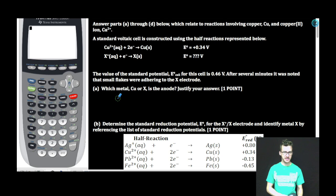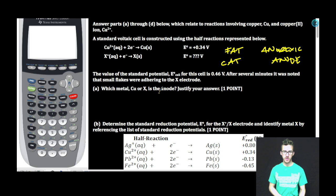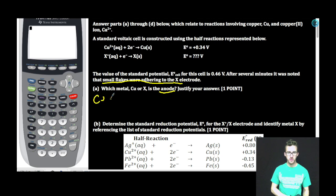Part A: Which metal, copper or X, is the anode? Justify your answer. All right, think about your voltaic cell. Remember, fat cat and anorexic anode. The cathode is gonna gain mass in a voltaic cell. The anode is gonna lose mass. So if we're trying to determine what is the anode, and we are noting that small flakes were adhering to the X electrode, that implies that X is gaining mass, getting fat, and therefore copper must be getting skinny. Anorexic anode. Cu is the anode.